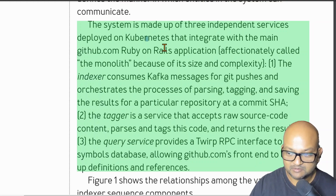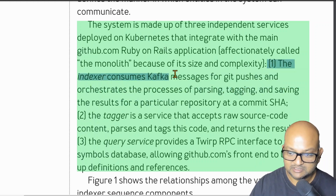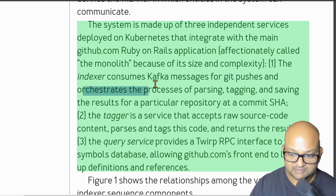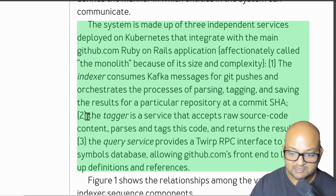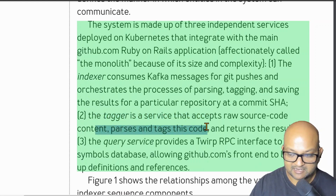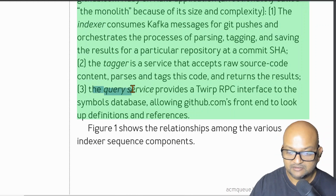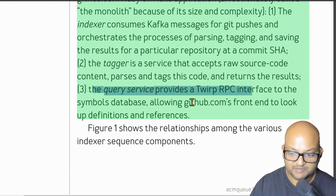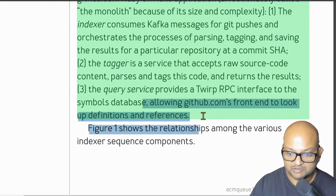The system is made up of three main components. The indexer consumes messages for each git push and orchestrates all downstream activities like parsing, tagging, and saving the results. The tagger is the service that does the heavy lifting — consuming raw source code, parsing and tagging it, and saving the results. Finally, the query service is responsible for serving all this information to the GitHub website.